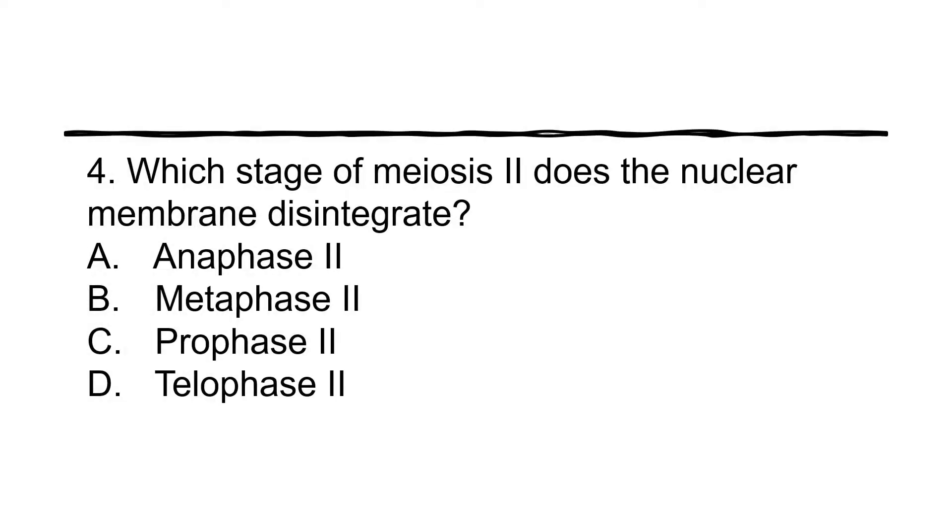Number four: which stage of meiosis II does the nuclear membrane disintegrate? A. anaphase II, B. metaphase II, C. prophase II, D. telophase II.